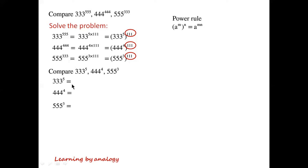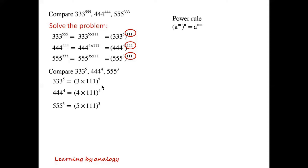The indices of these numbers are different, and there's no common factor between the indices. However, the bases have a common factor of 111. So we can write 3 times 111, all to the power of 5; 4 times 111, all to the power of 4; and 5 times 111, all to the power of 3.